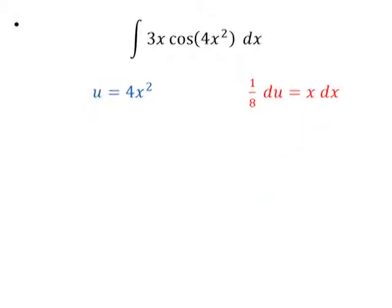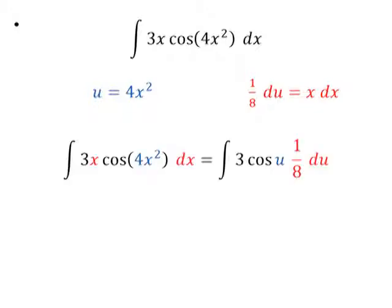Now substituting back into my original problem, I get the integral of 3 cosine u one-eighth du. And using constants again, I can bring the three-eighths out in front of the integral.